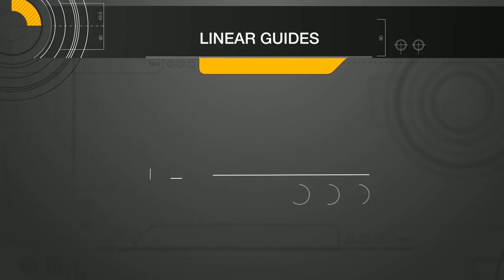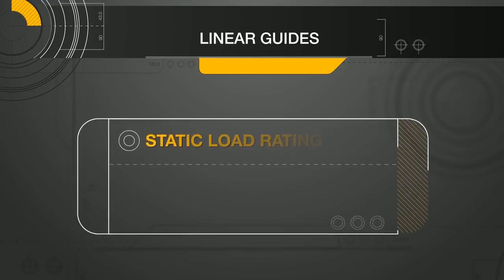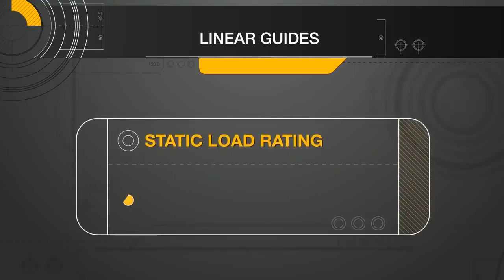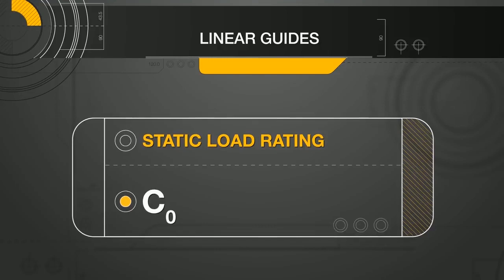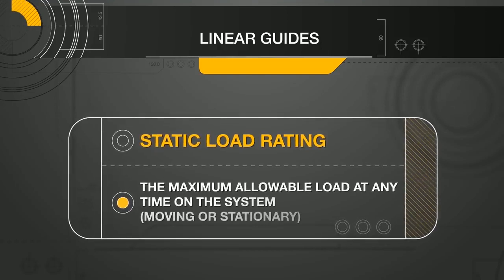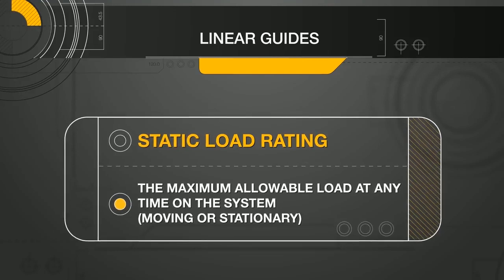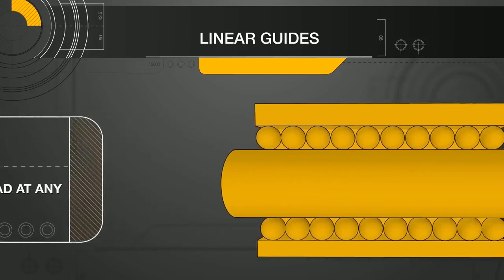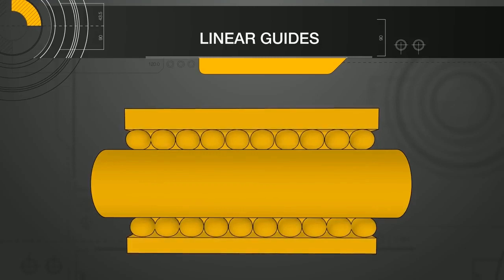Now that we understand the common load directions, let's discuss how linear guides are rated. The first rating is the basic static load rating, denoted C0. The basic static load rating is the maximum allowable load at any time on the system, moving or stationary. It is a measure of plastic or permanent deformation of the bearing element.